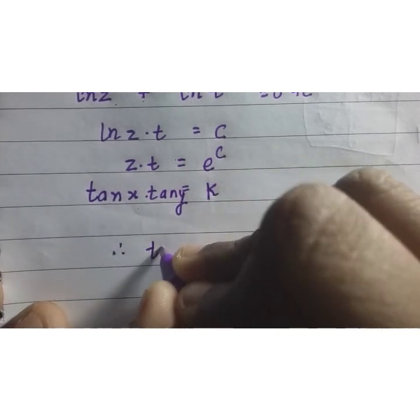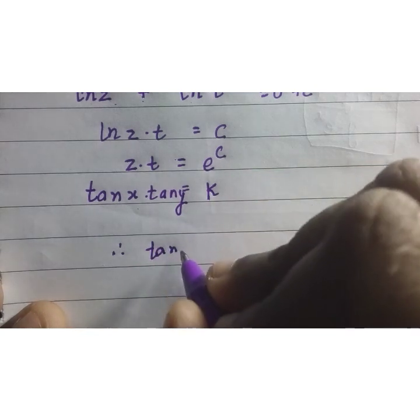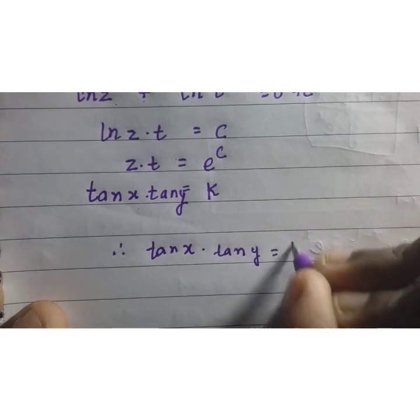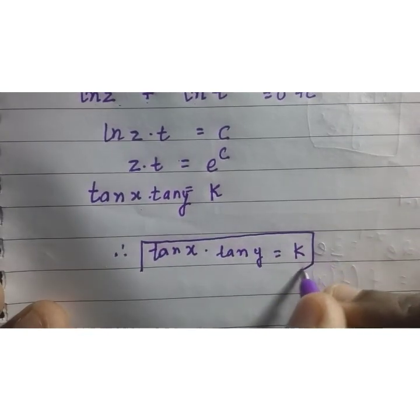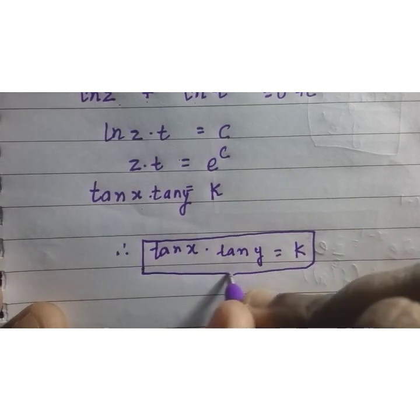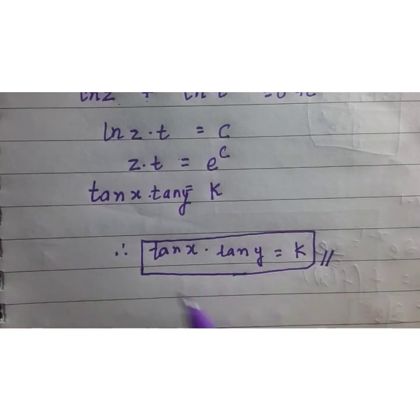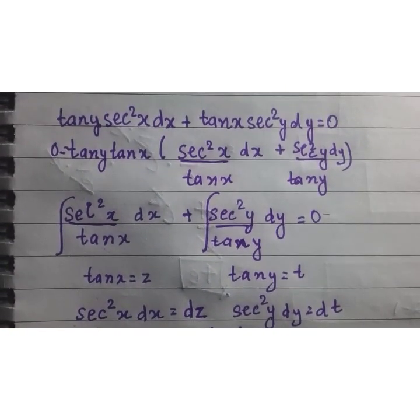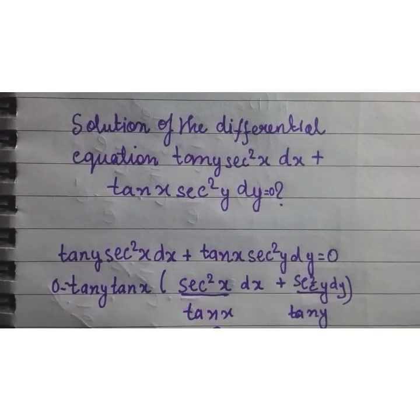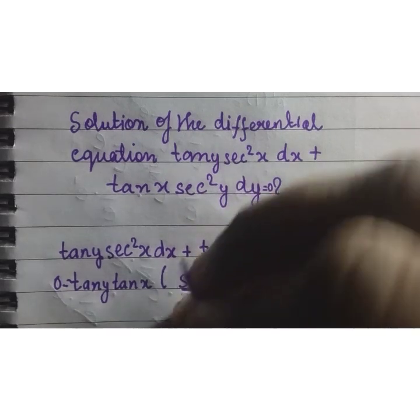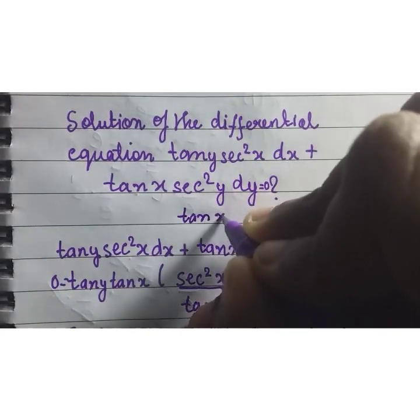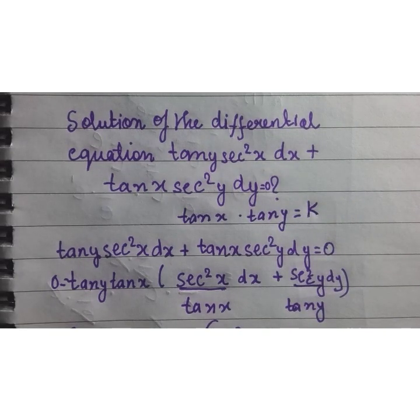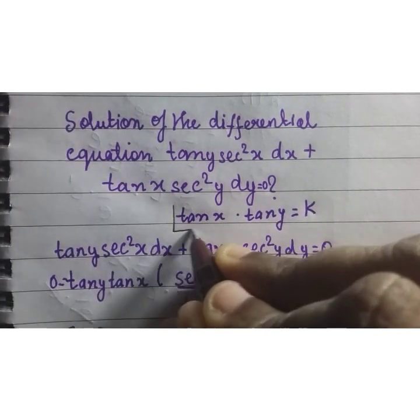Therefore, our final answer is tan(x) into tan(y) is equal to k. This is our answer. So, the answer to this question is tan(x) into tan(y) is equal to k. We have solved our differential equation and this is the solution.